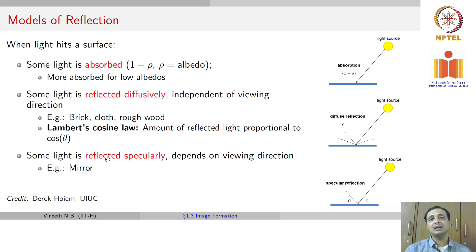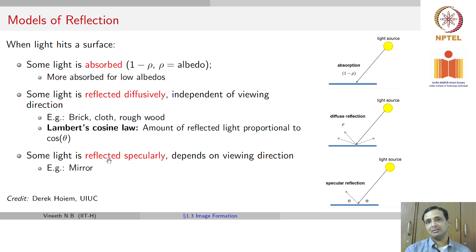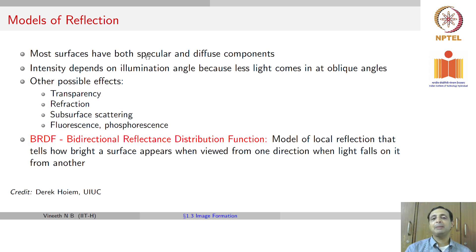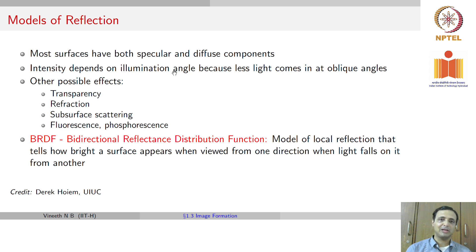Thirdly, some light is also reflected specularly, where the reflected light depends on the viewing direction. An example of a surface where this happens is a mirror, where the reflected light follows the same angle as the incident light. Generally, in the real world, most surfaces have both specular and diffuse components. The intensity you receive at the output also depends on the illumination angle, because at oblique angles, less light comes through. In addition to absorption, diffuse reflection, and specular reflection, there are other actions possible.